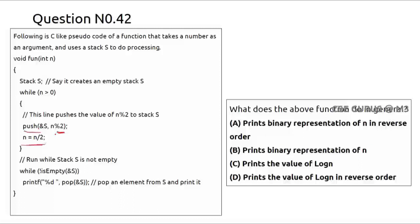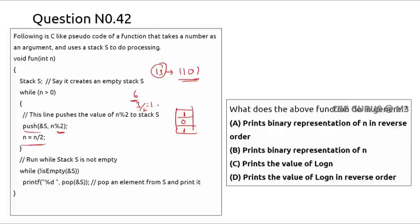Let's trace with n = 13, whose binary representation is 1101. Push 13 mod 2 = 1, then n = 13/2 = 6; push 6 mod 2 = 0, then n = 6/2 = 3; push 3 mod 2 = 1, then n = 3/2 = 1; push 1 mod 2 = 1. So the stack contains 1, 1, 0, 1 from bottom to top.